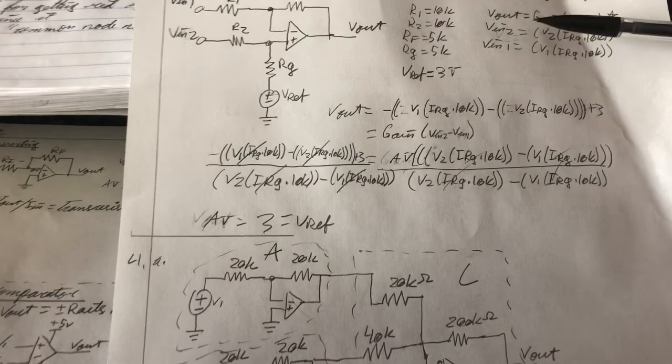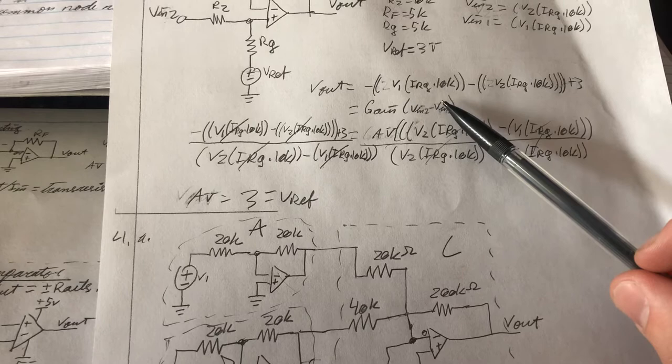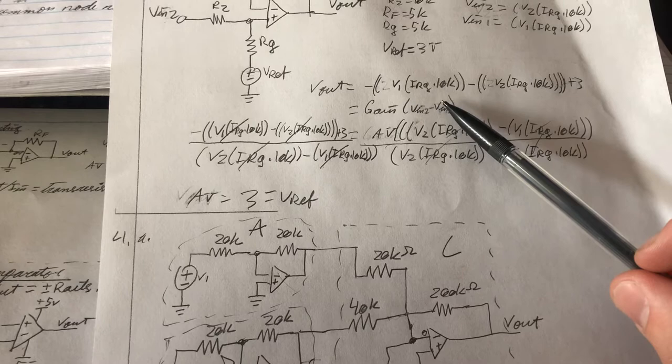So if we plug V2 and V1 equal to this equation up here, we're left with this. Here, here, plus 3. So we have the gain is equal to that.